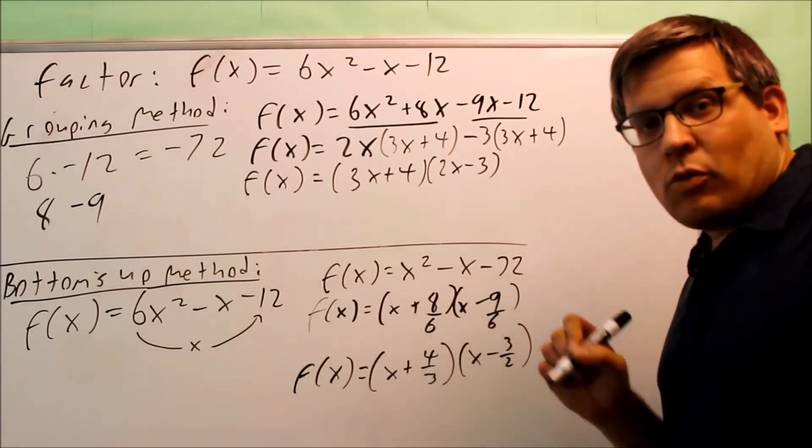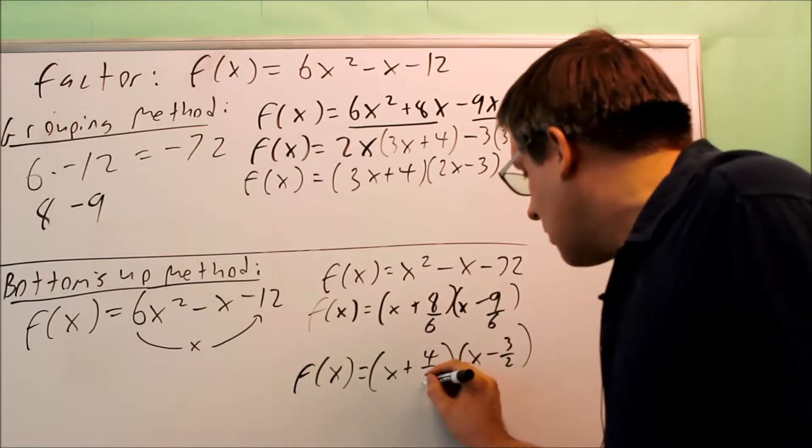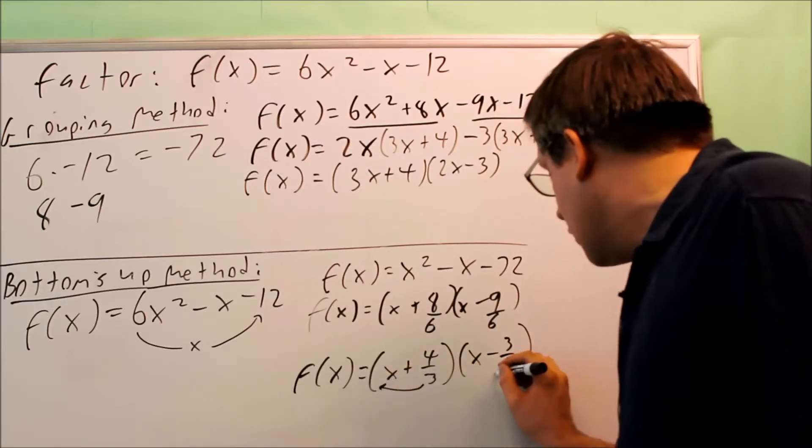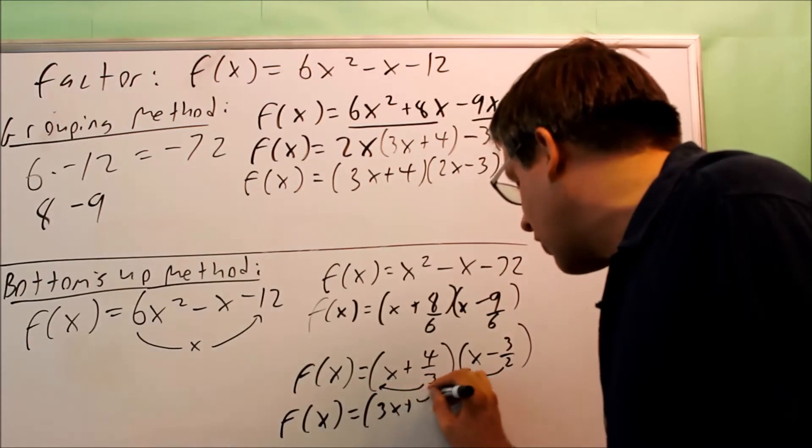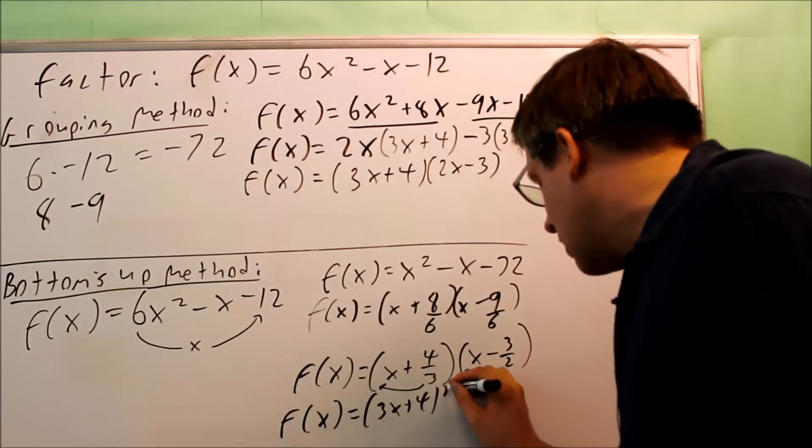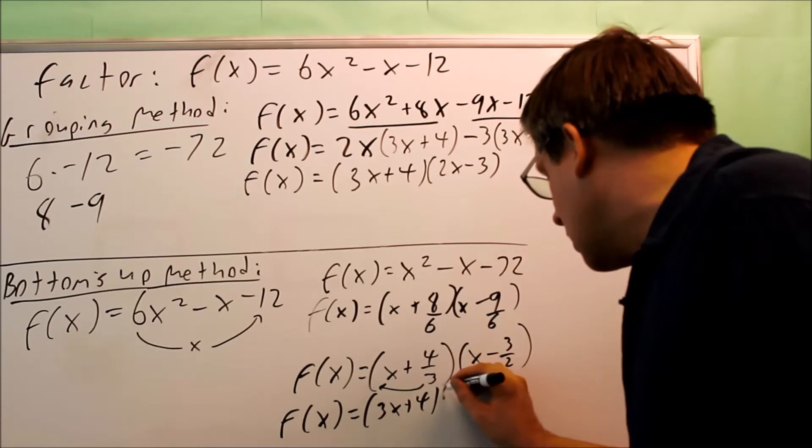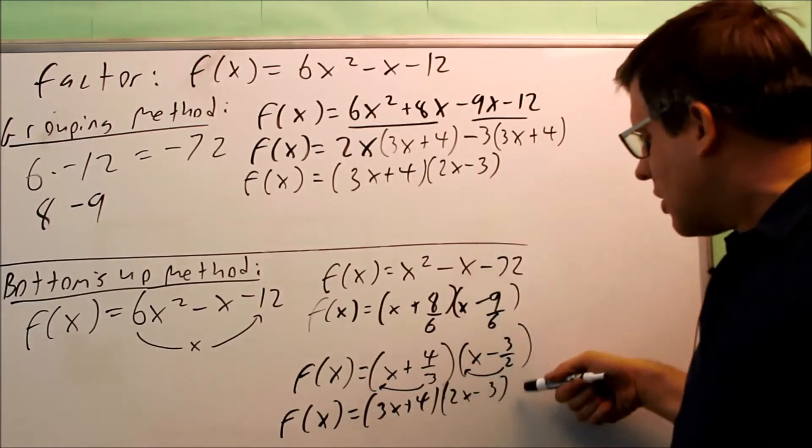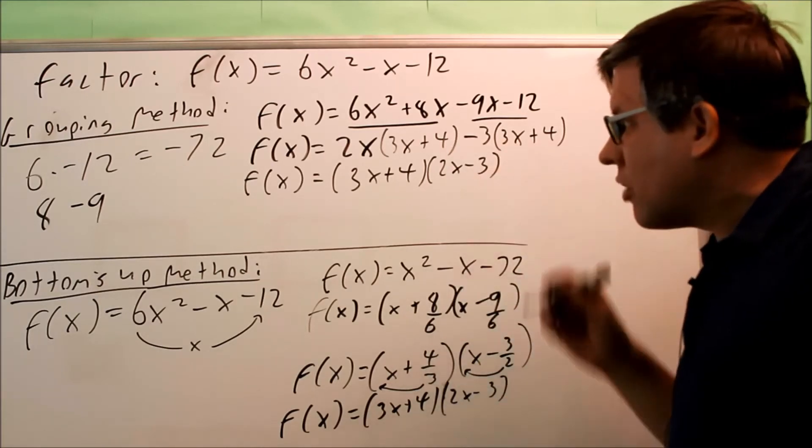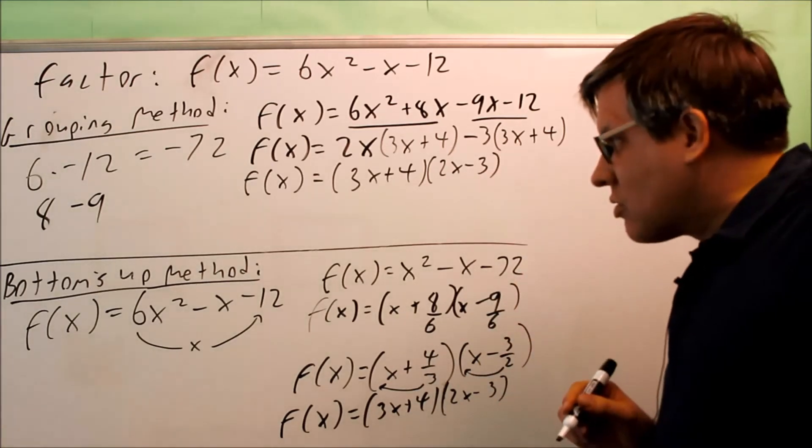So now we end up with this. Now you're going to do one more step. The bottoms up method gets its name because you take the bottom number and you move it up next to the x. So when you do, you get 3x plus 4, and you get 2x minus 3. Now that's the same exact answer we had before. So now we get this and this are exactly the same, so it verifies that that is the correct way to factor this one.